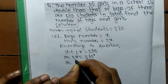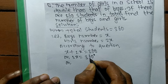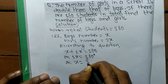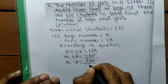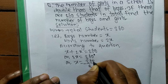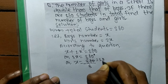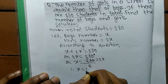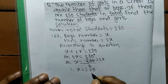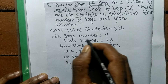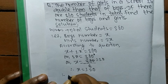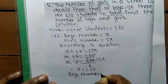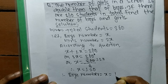Now, 3 is multiplying X, so when changing sides its sign also changes. So X is equal to 360 divided by 3. Since 360 divided by 3 is 120, we get the value of X which is equal to 120.